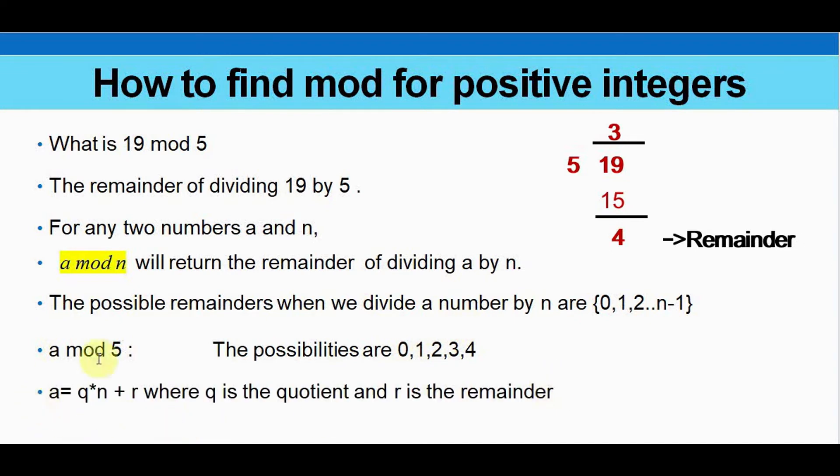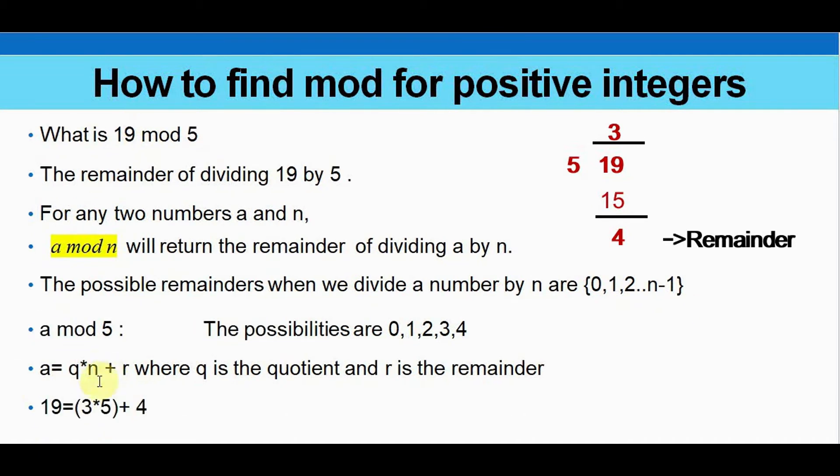So you can use this formula. A can be represented as q star n plus r, where q is the quotient and r is the remainder. So now we can represent a, in this case 19, in terms of this formula q star n plus r.